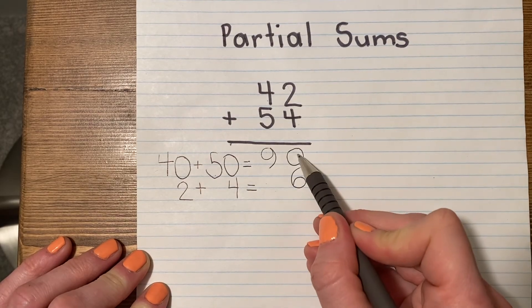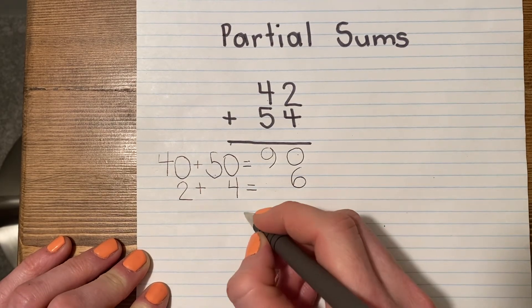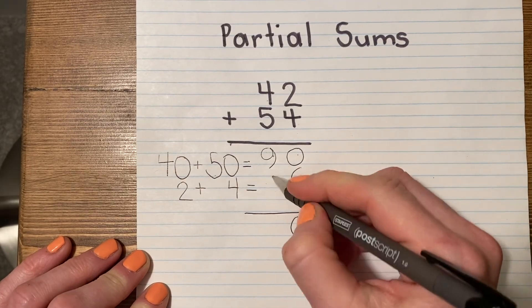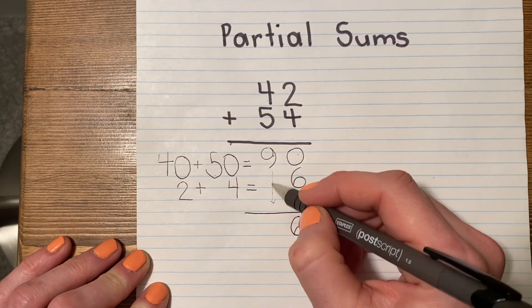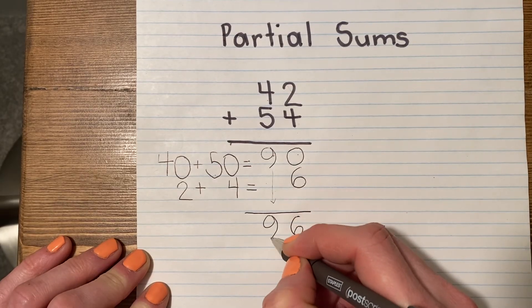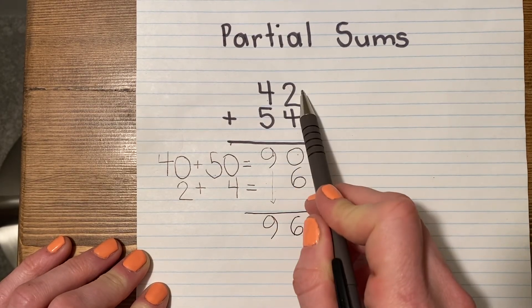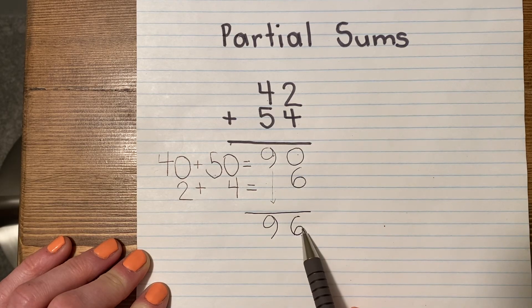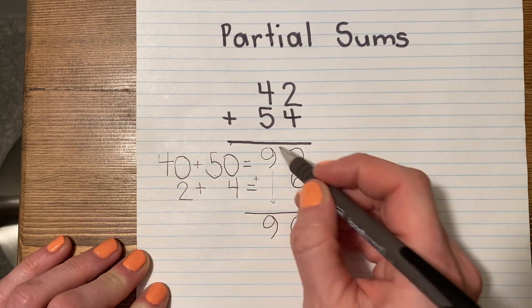So now I've got 0 plus 6, and I pull down 9 tens. So 42 plus 54 equals 96.